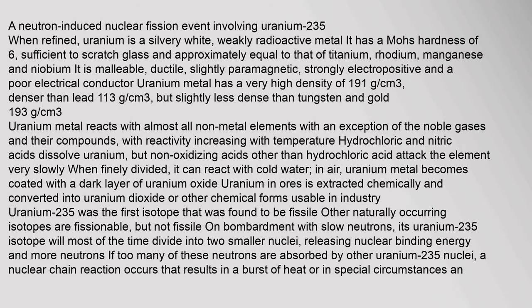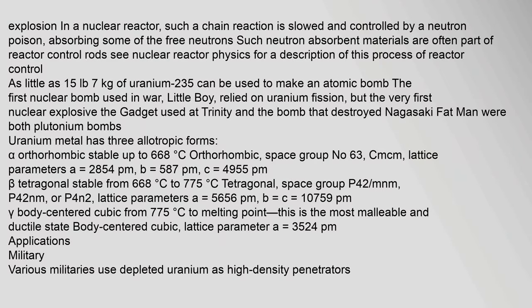When refined, uranium is a silvery white, weakly radioactive metal. It has a Mohs hardness of 6, sufficient to scratch glass, and approximately equal to that of titanium, rhodium, manganese, and niobium. It is malleable, ductile, slightly paramagnetic, strongly electropositive, and a poor electrical conductor. Uranium metal has a very high density. In a nuclear reactor, a chain reaction is slowed and controlled by a neutron poison absorbing some of the free neutrons; such neutron-absorbent materials are often part of reactor control rods.